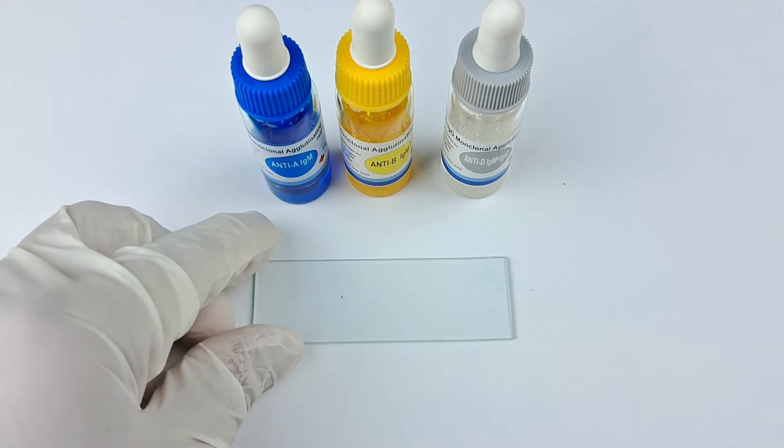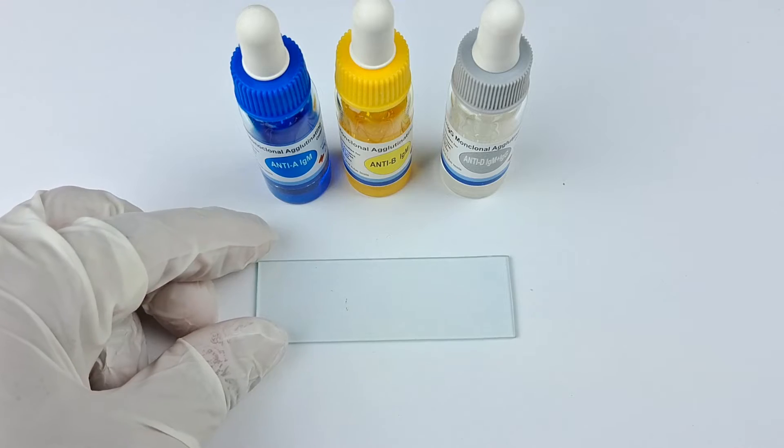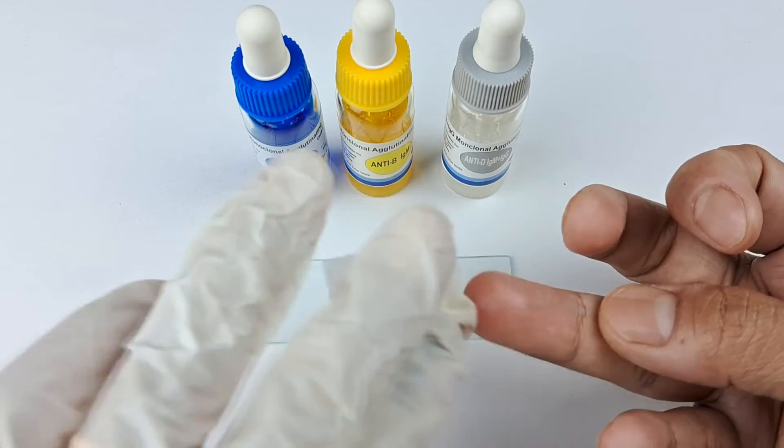Meanwhile, take the pre-cleaned glass slide and place it on a white sheet of paper or porcelain tile. Next, surface sterilize the tip of the middle or ring finger using an alcohol swab.